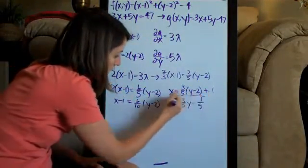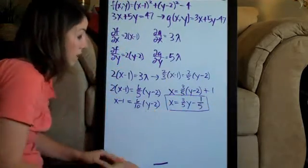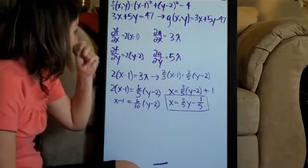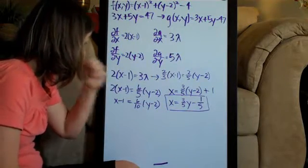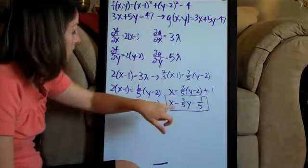Now, this is our relationship between x and y. This is very important, we'll keep this up on the board. Now that we have this, the next step is to plug in this 3 fifths y minus 1 fifth in for x to our original constraint equation.